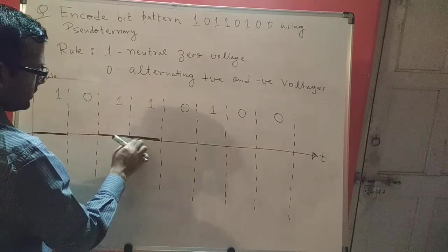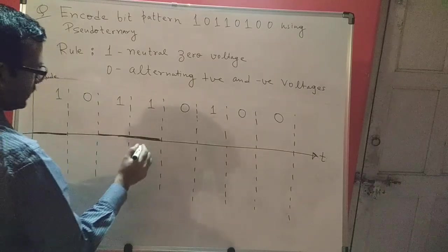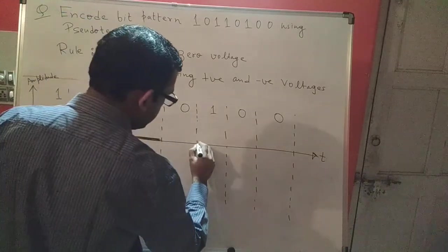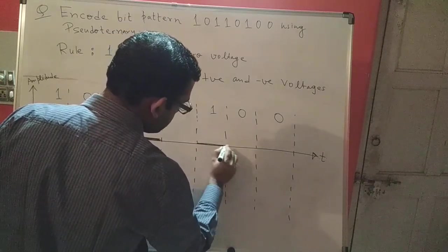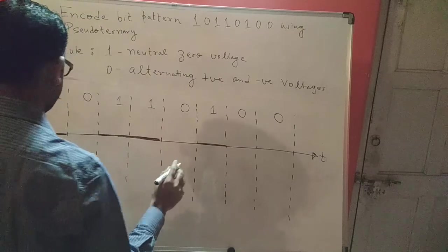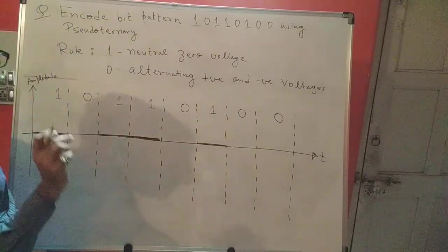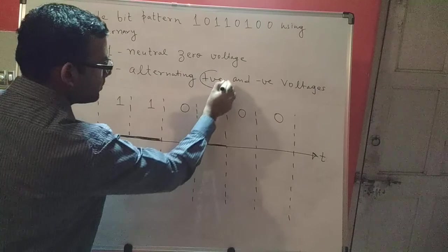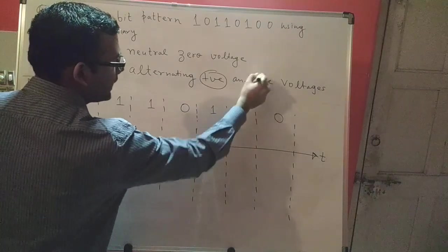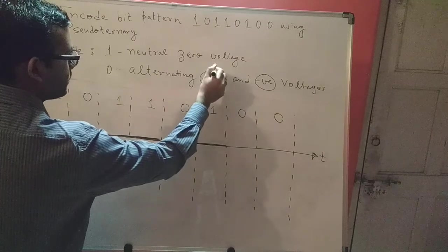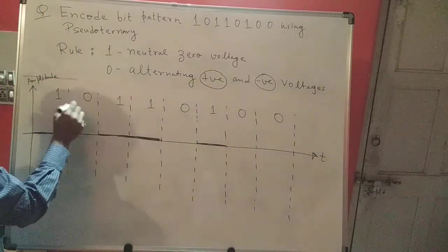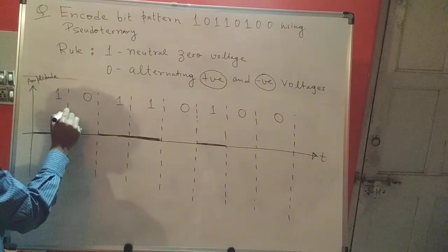And then again here I find a 1, so I'll encode it along the time axis. That's it, that takes care of my ones. Now let's handle the zeros. It's alternating positive and negative voltage, so we'll have to start with positive. The first 0 will be a positive voltage.